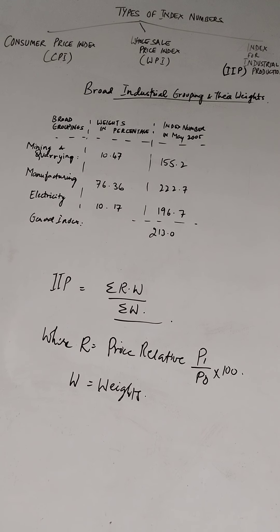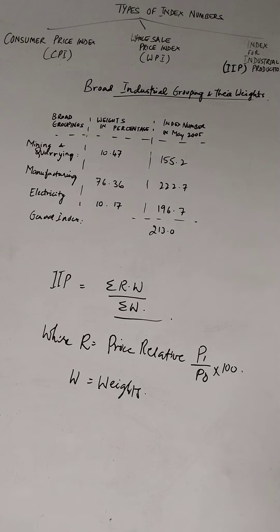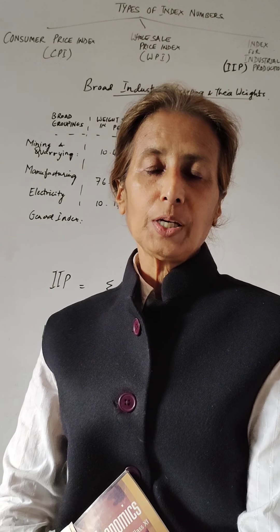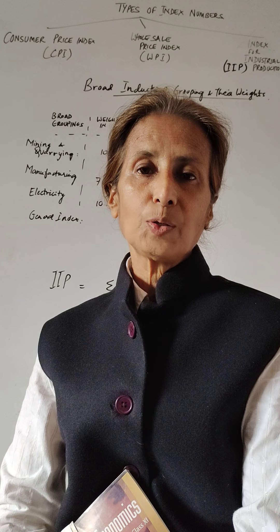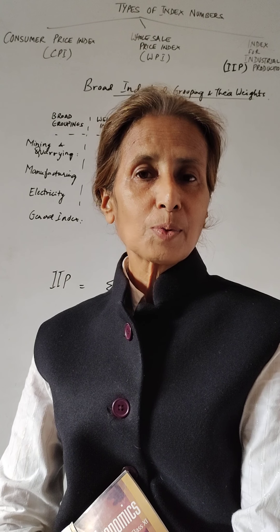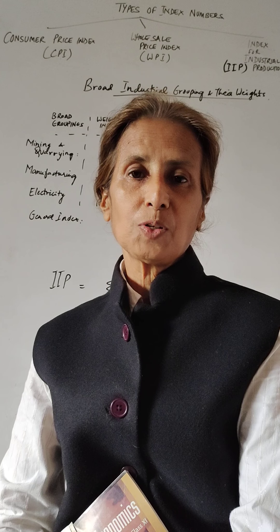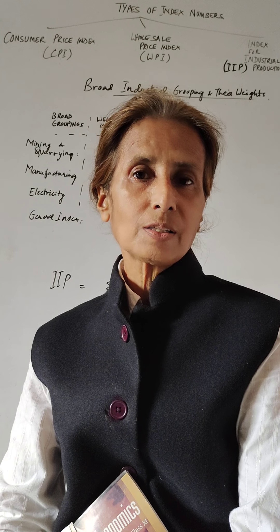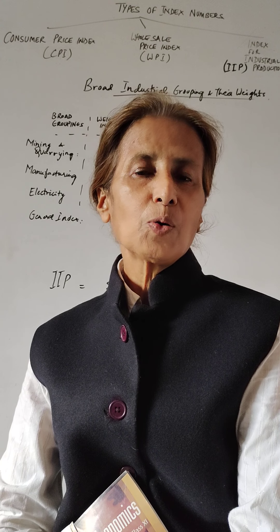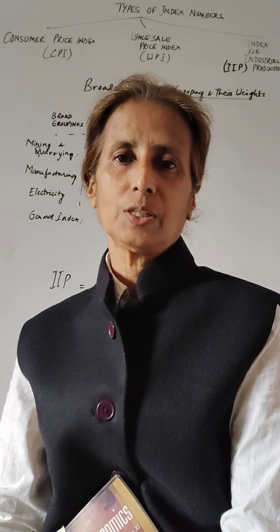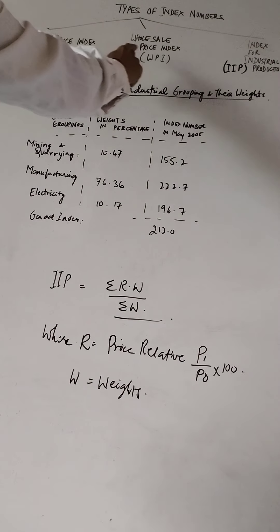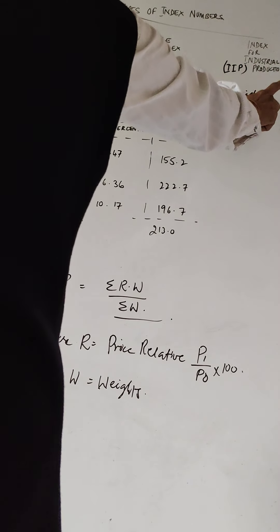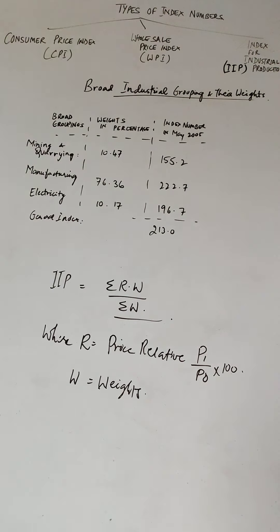Welcome to my class. We are at the core of the book Statistics for Economics, doing Unit 3 — Statistical Tools and Their Interpretation. Within index numbers, we have finished consumer price index and wholesale price index, and today we are going to do index for industrial production. So the types of index numbers are: consumer price index, wholesale price index, and index for industrial production.